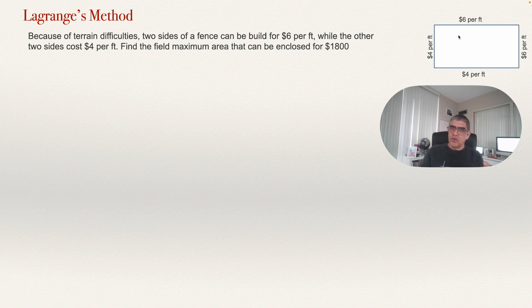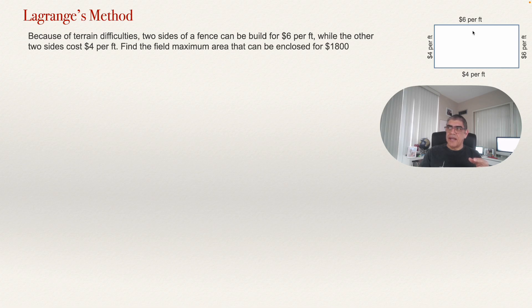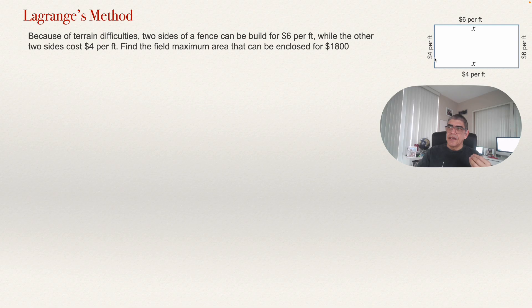The first thing we need to do is fix the variables. What are the variables we have in the problem? We can call X the length of the rectangle, so opposite sides are both X. We can also change the width of the rectangle — let's call it Y. So we have two variables, X and Y.